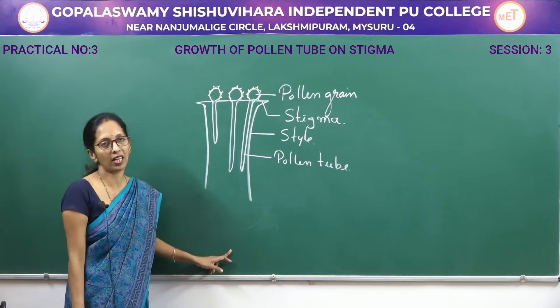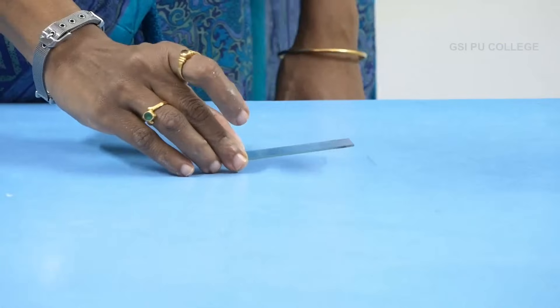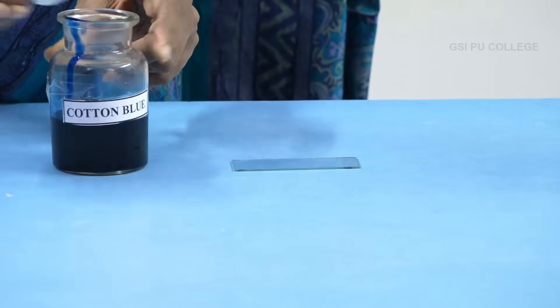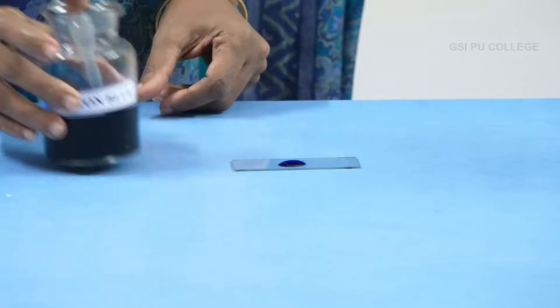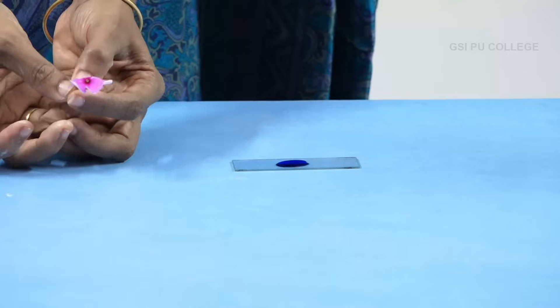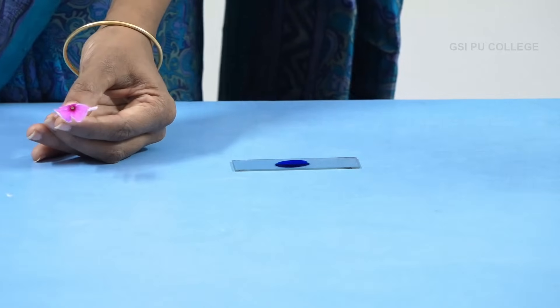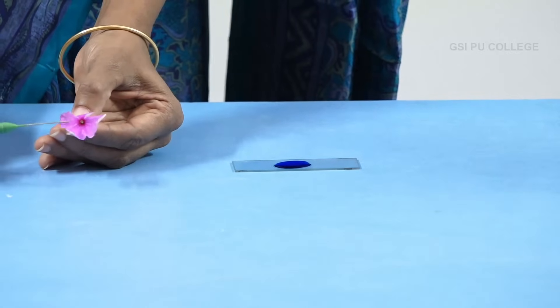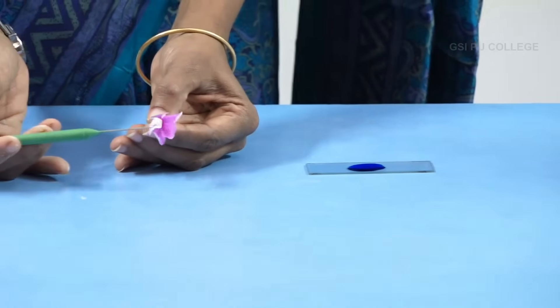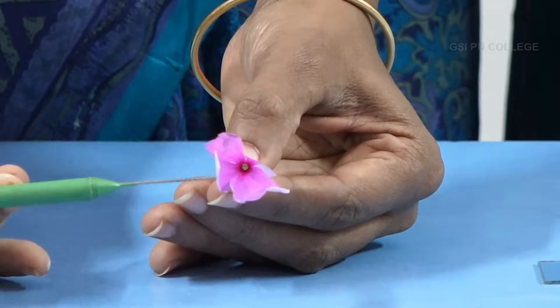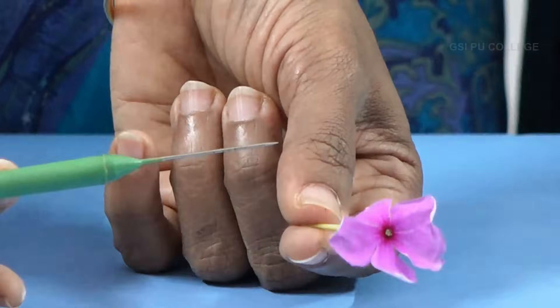For this experiment, take a glass slide. We are using cotton blue stain — add one drop of cotton blue stain. We are using a Vinca rosea flower. This is the corolla tube, these are the petals or corolla lobes, and inside this tube there is a presence of the ovary.